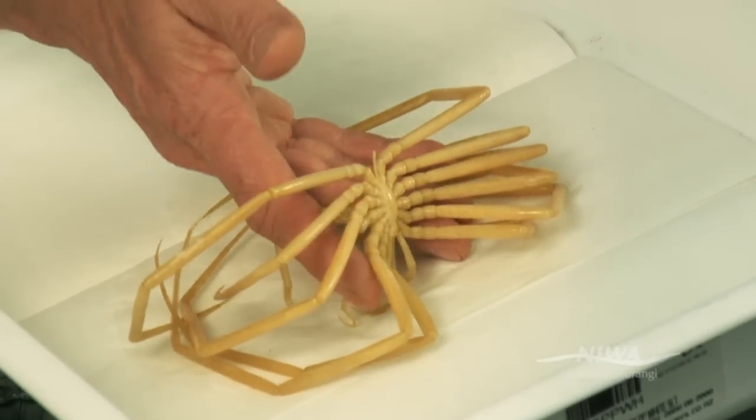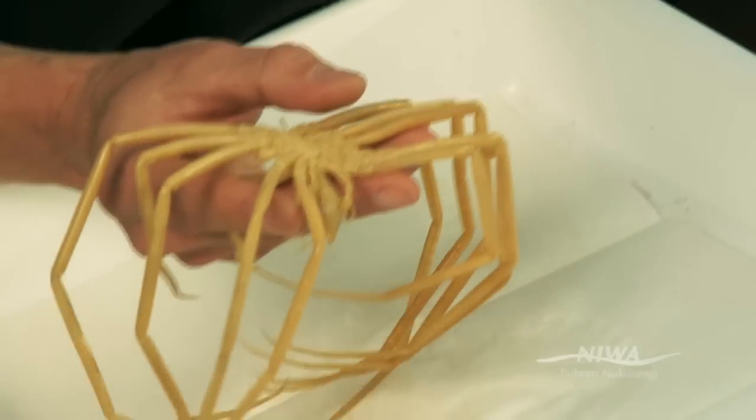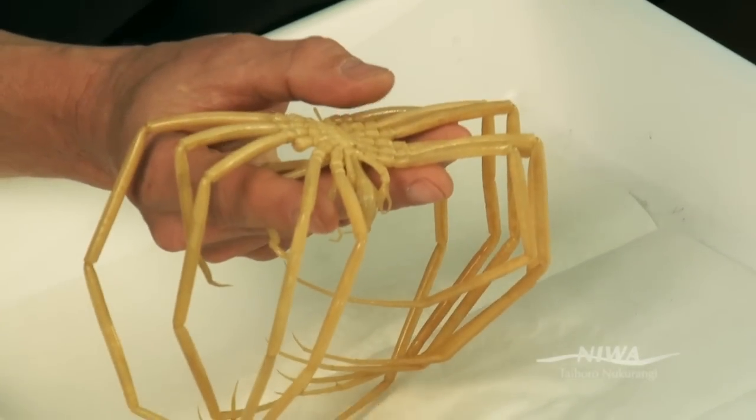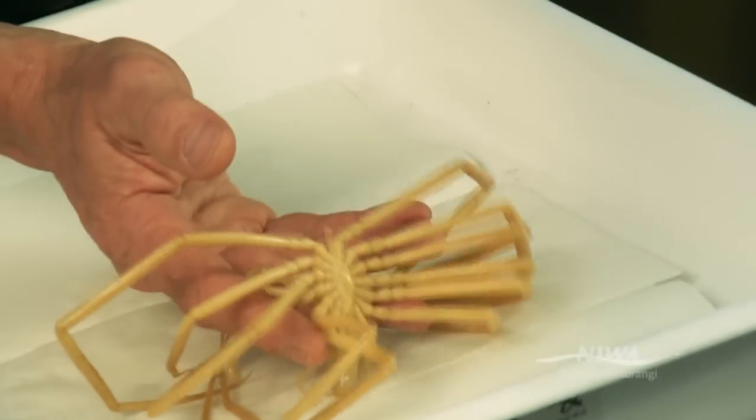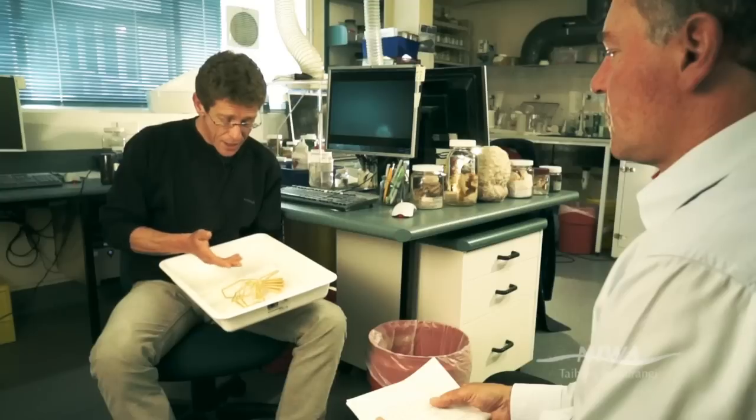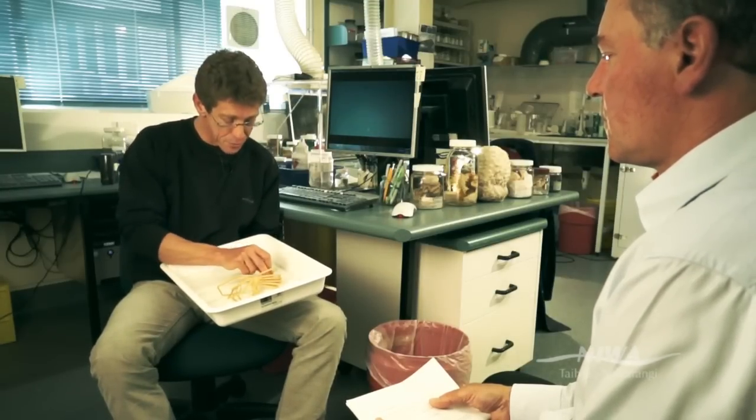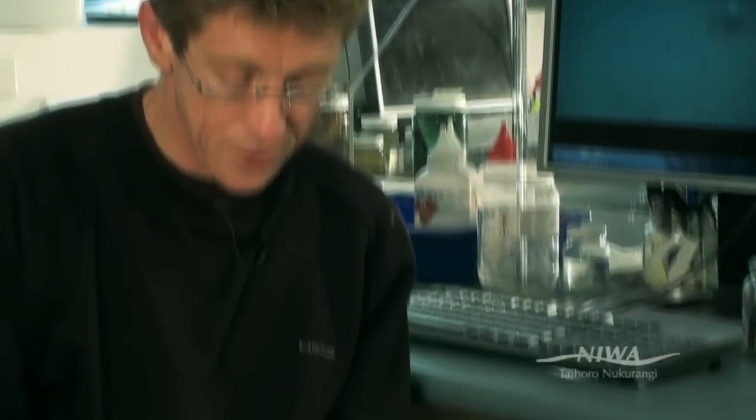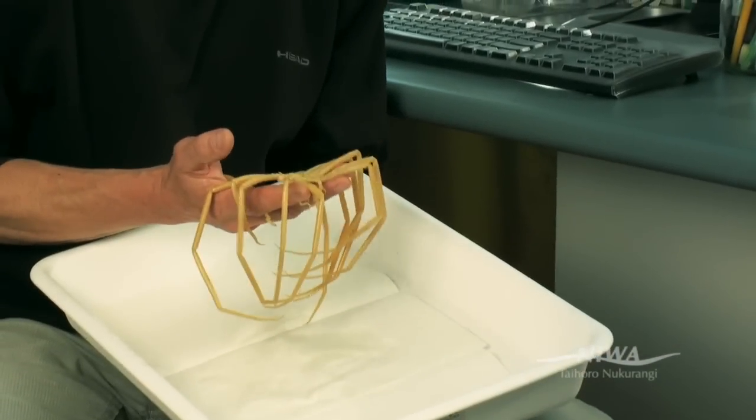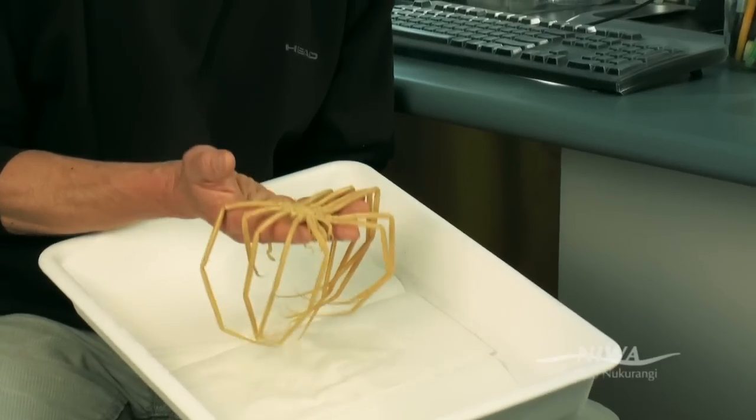This is a sea spider, a pycnogonid, which is one of the groups which is intriguing in the Antarctic system because they're much more diverse in the Antarctic than they are in the rest of the world. There's a much larger proportion of all the species that exist are in the Antarctic than elsewhere. Another interesting point from just looking at this one here, this magnificent thing here, is they grow very large.